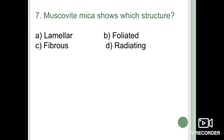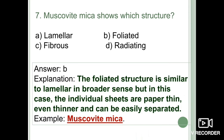Next question: muscovite (white mica) shows which structure — lamellar, foliated, fibrous, or radiating? The foliated structure is similar to lamellar in a broader sense, but in this case the individual sheets are paper-thin and can be easily separated. The best example is muscovite mica — you can see very thin layers in the field that can be separated from one another. The correct option is option B: foliated form.